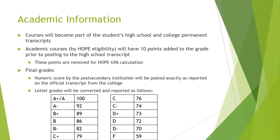Dual enrollment courses appear on the student's high school transcript but also begin the student's college permanent transcript, affecting both the college GPA and the high school GPA. Academic courses by HOPE eligibility will have 10 points added to the grade prior to posting to the high school transcript; those points are removed for HOPE GPA calculation but remain in the high school GPA calculation. If a numeric score is reported by the post-secondary institution, that score will be placed on the high school transcript. Most colleges report letter grades, which will be converted as shown on the chart.